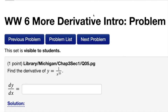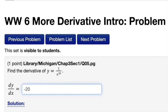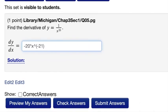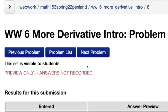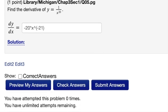I just have to type that in correctly. The big thing is, it's going to be negative 20 times x to the negative 21, and I can always preview to make sure that matches what I wanted it to look like. I'm going to submit the answer.